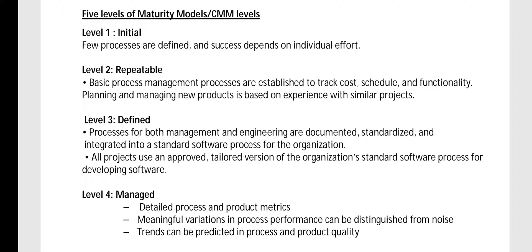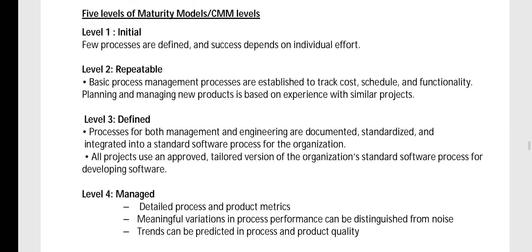The five CMM levels: Level 1 is Initial — only a few processes are defined and success mainly depends on individual effort. Level 2 is Repeatable — basic process management processes are established to track costs, schedule, etc., which is a better level. Level 3 is Defined — processes for both management and engineering are documented, standardized, and integrated into a standard software process for the organization.